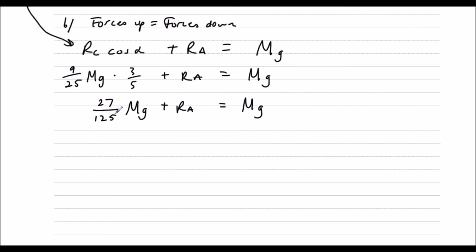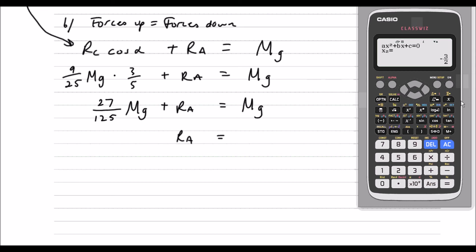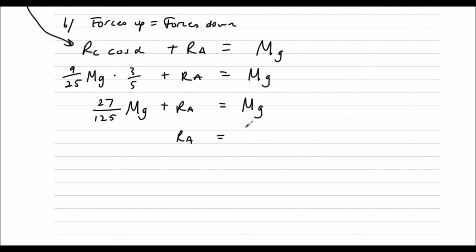So 9 twenty fifths times three fifths will be 27 over 125 mg plus the reaction at A equals mg. So we've got one mg. To get reaction at A by itself, we've got one mg take away 27 over 125. We can use the calculator. So one take away 27 over 125 will be 98 over 125 mg.